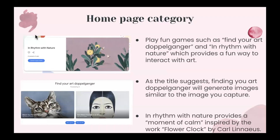You can also play fun games. There are notable ones called Find Your Art Doppelganger and In Rhythm with Nature, which allow you to interact with art in a fun way. As the title suggests, you can find art that looks just like you, and it will generate images similar to whatever image you capture of yourself. The next game, In Rhythm with Nature, provides a moment of calm inspired by the work Flower Clock by Carl Linus. There are lots of ways to stay engaged, and it's kind of like you can never get bored with Google Arts and Culture.